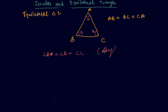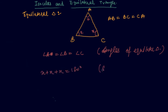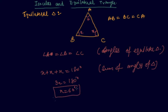Since all angles of an equilateral triangle are equal, I can write X plus X plus X equals 180°, using the sum of angles of a triangle. So in an equilateral triangle, each angle should always be equal to 60°. This is the property of equilateral triangles — all angles equal 60°.